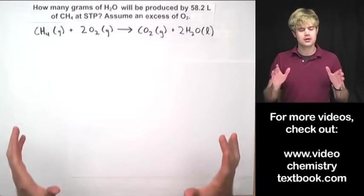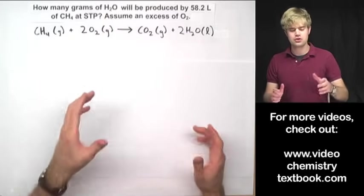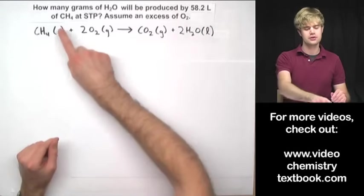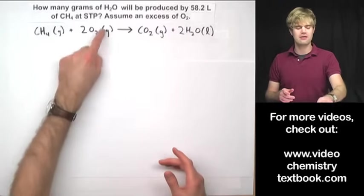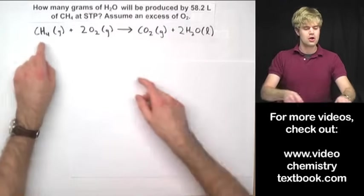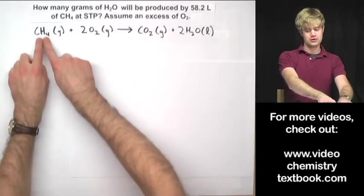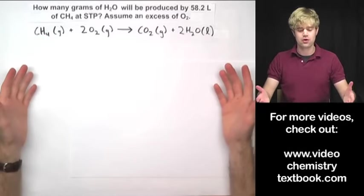The question that I'm working with here is how many grams of H2O, water, will be produced by 58.2 liters of CH4 at STP? Assume an excess of O2, which means that I have all of the oxygen gas that I want. So I have a certain amount of this that I'm putting in, of methane or natural gas, and I want to know how much water I'm going to be getting out of it.